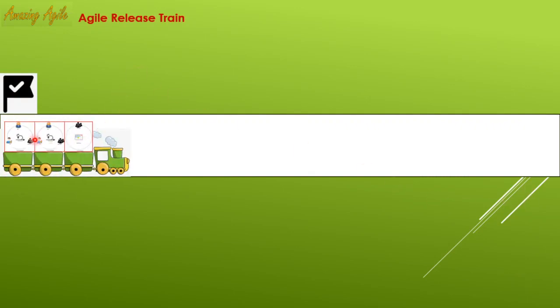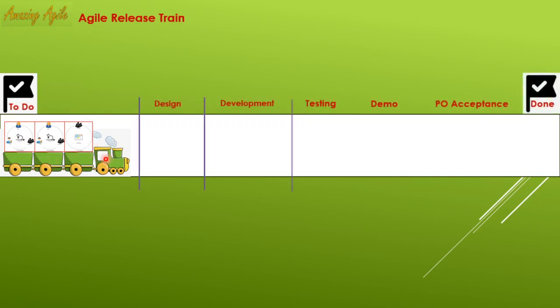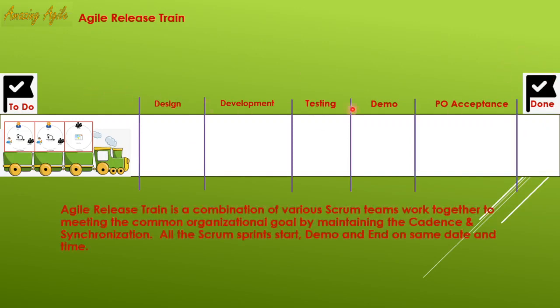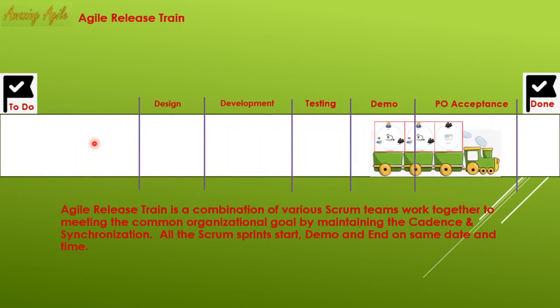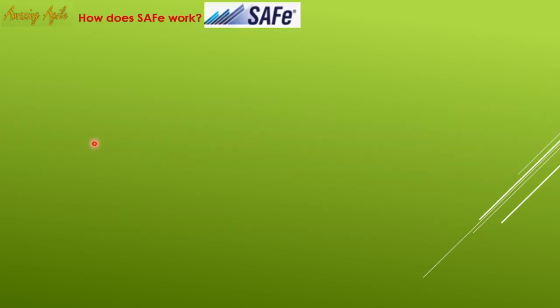Here is the destination, and here is the train. The compartments represent all the Scrum and Kanban projects — assume 20 compartments for 20 projects. There are stations in between representing your Scrum board stages: To Do, Design, Development, Testing, Demo, Peer Acceptance, Done. The train moves through each station and then to the final destination. That is called the Agile Release Train.